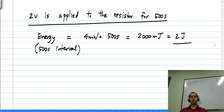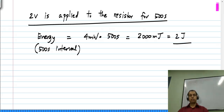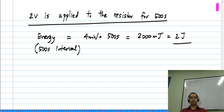Very simple calculation — as long as you know the voltage across a resistor or the current through a resistor, you should be able to calculate the power delivered to the resistor or the energy delivered to the resistor.